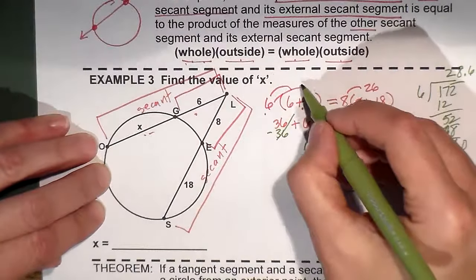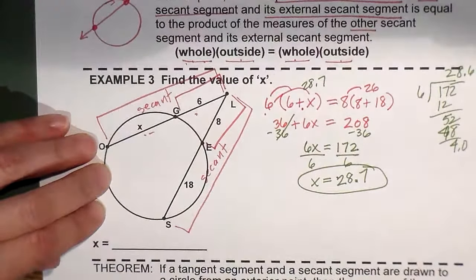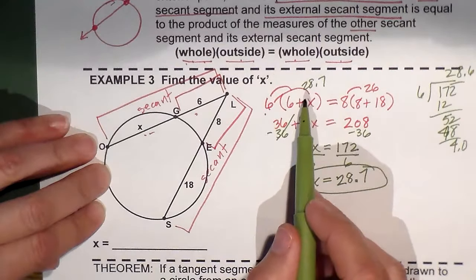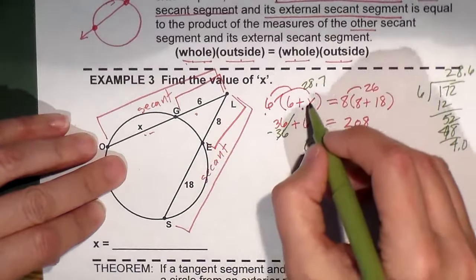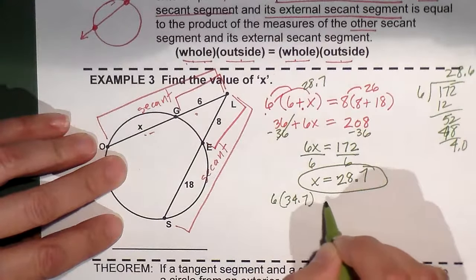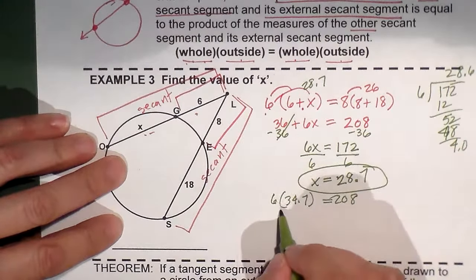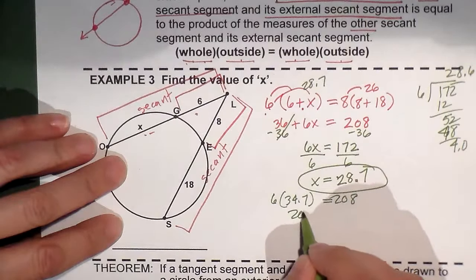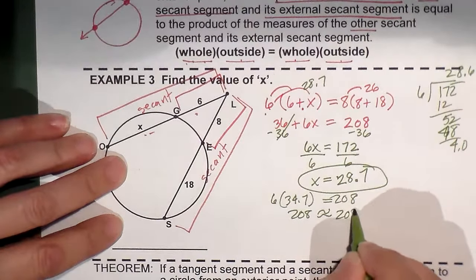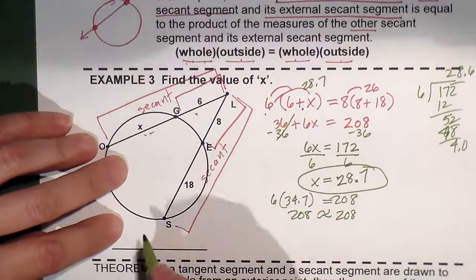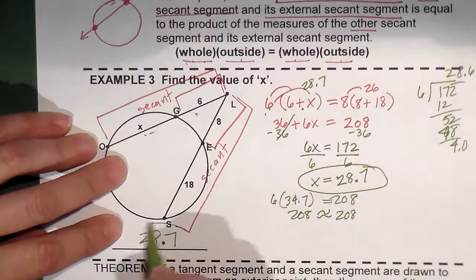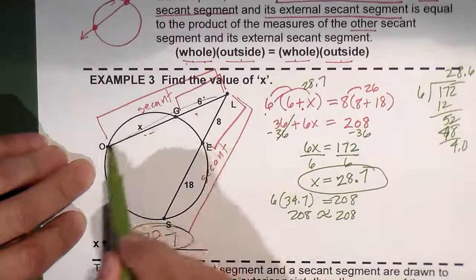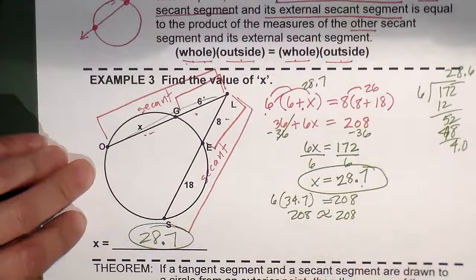So how do we check it? Well if I plug twenty-eight point seven back in for x, what am I going to get? So that gives me thirty-four point seven. I cannot think. Sorry my child is talking to me. So that gives me thirty-four point seven times six equals two oh eight. And this gives you one eighty and twenty-four which is two oh four. And six times seven is about four. So that's going to be about approximately two oh eight. So that is correct. That was a tough one because you got a decimal and you got to round it. So twenty-eight point seven is x.